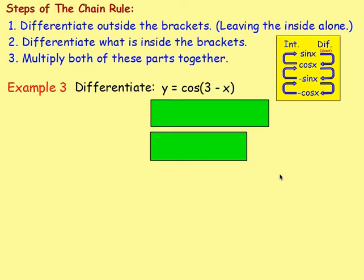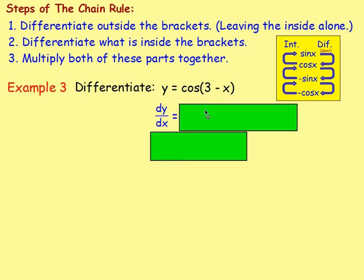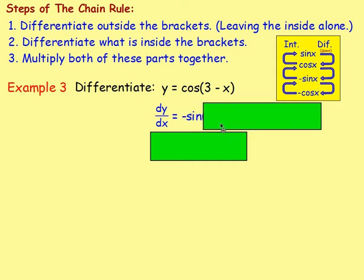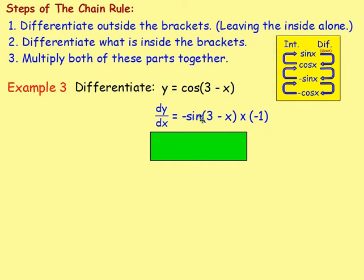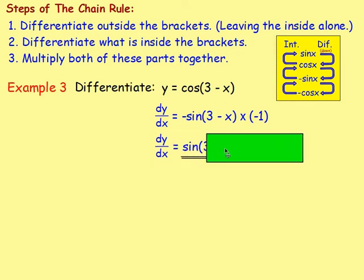Example 3: differentiate y equals cos(3 minus x). We've got the brackets and the trig term, so we're thinking about the chain rule. Differentiating: dy/dx — if you differentiate cos, thinking sine, cos, negative sine, negative cos going down — cos would go to negative sine. So we'll have negative sine, and keep the brackets just as they are: negative sine(3 − x). Now differentiate inside the brackets: differentiating 3 minus x gives minus 1, so we multiply by negative 1. We've got a negative here and a negative here — they cancel, leaving you with sine(3 − x). That is your answer.